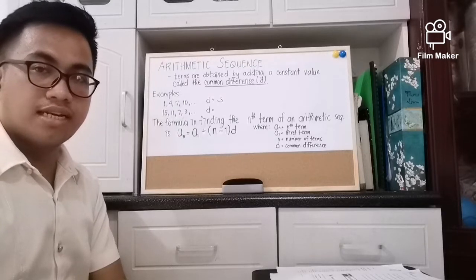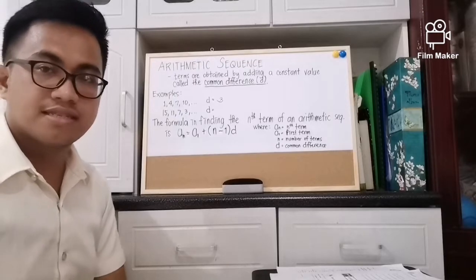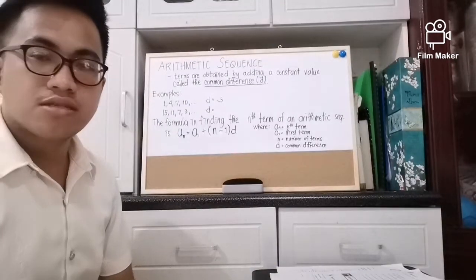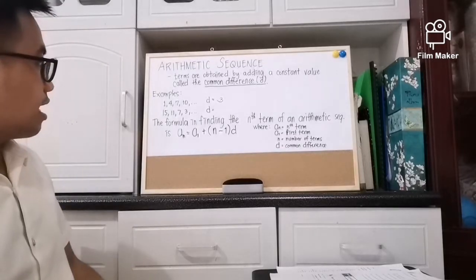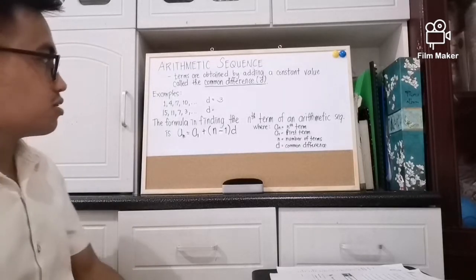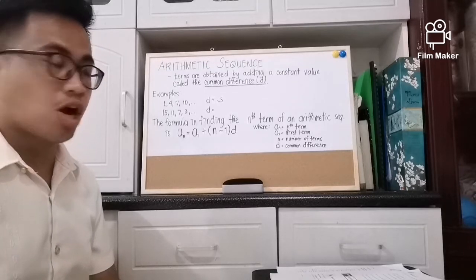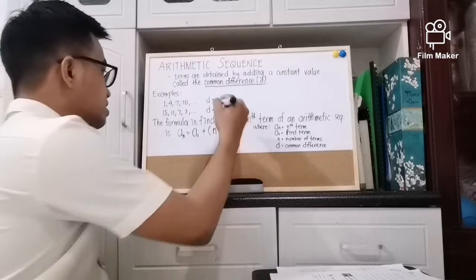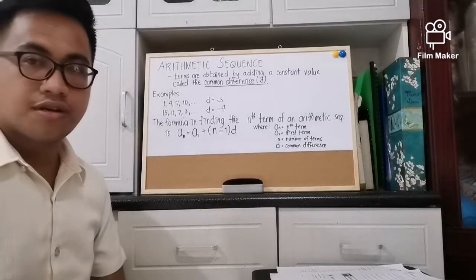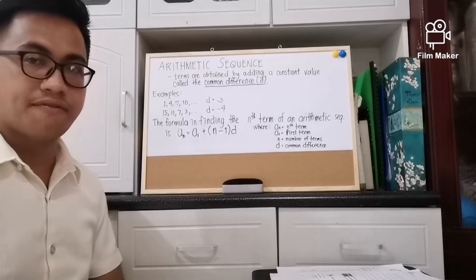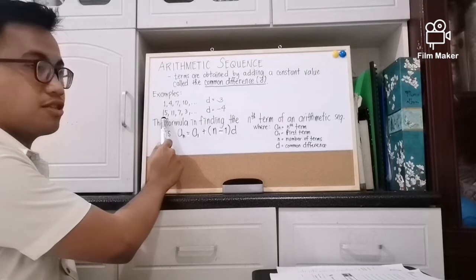When you subtract those terms it should have a common number, and that common number is the common difference. Now let's go on to the second example: 15, 11, 7, 3 is also an example of arithmetic sequence because it has a common difference which is negative 4. How did we get the common difference? We subtract the second term from the first term — 11 minus 15 is negative 4.